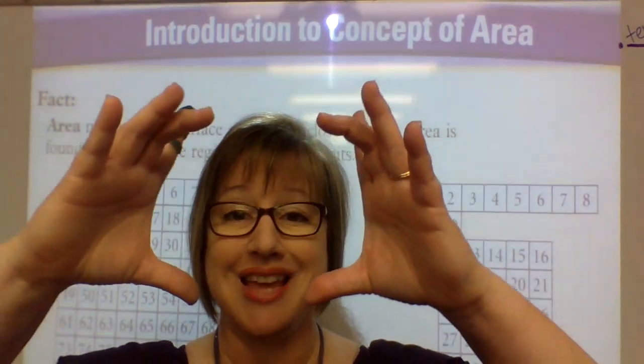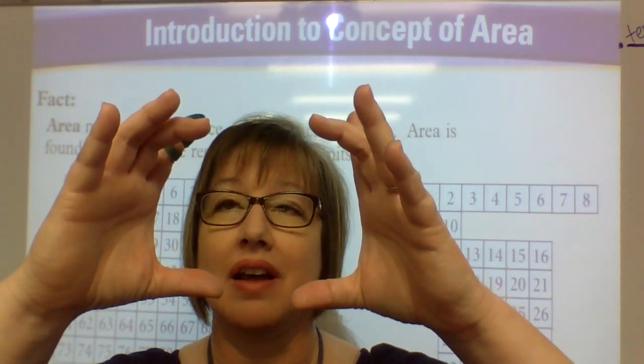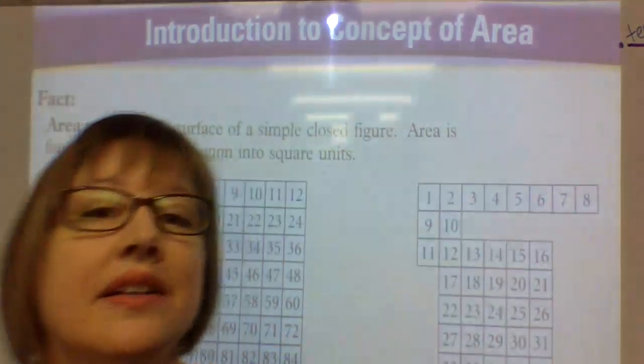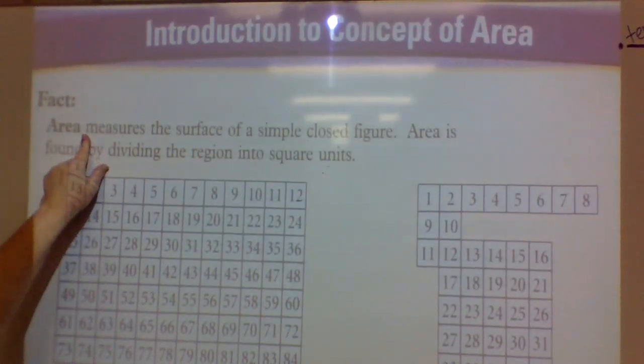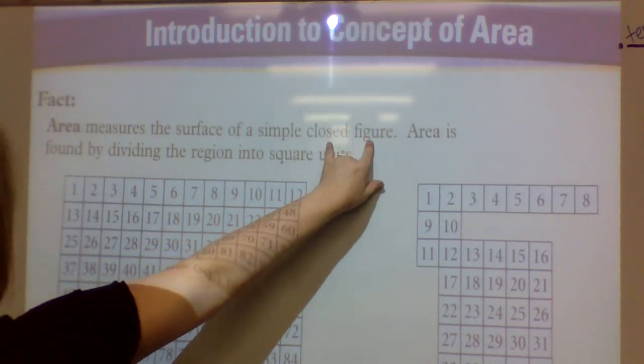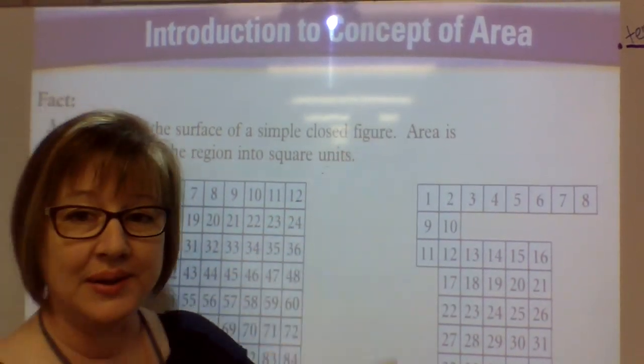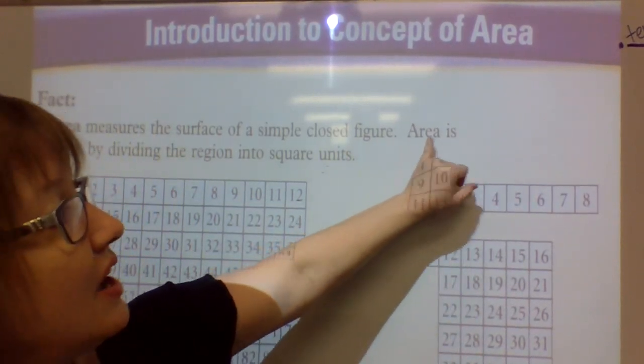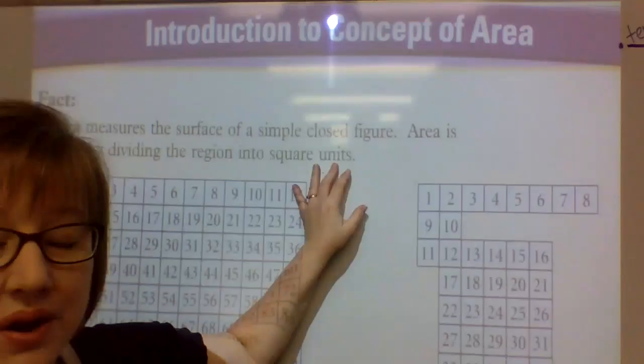Area, though, is the area inside. Not the distance around, the area inside. We'll see what they actually say for their definition. It says, area measures the surface of a simple closed figure. Remember we talked about those. That means it just has no lines of intersection. Area is found by dividing the region into square units.